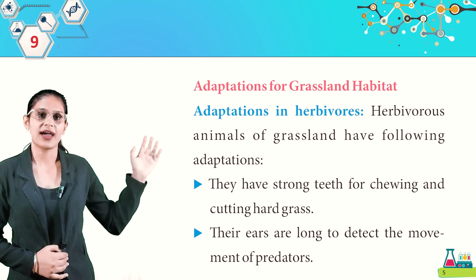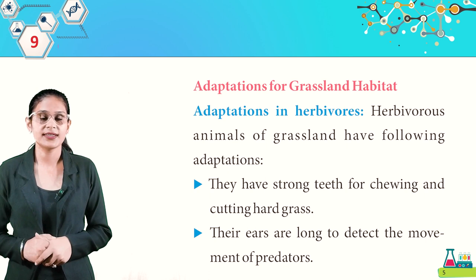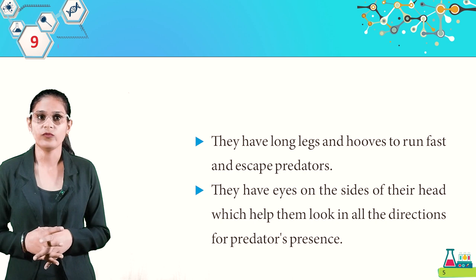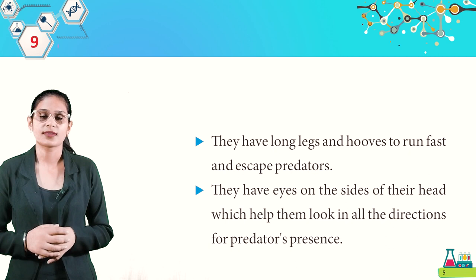Herbivorous animals of grassland have the following adaptations: strong teeth for chewing and cutting hard grass, long ears to detect the movement of predators, long legs and hooves to run fast and escape predators, and eyes on the sides of their head to look in all directions for predators.